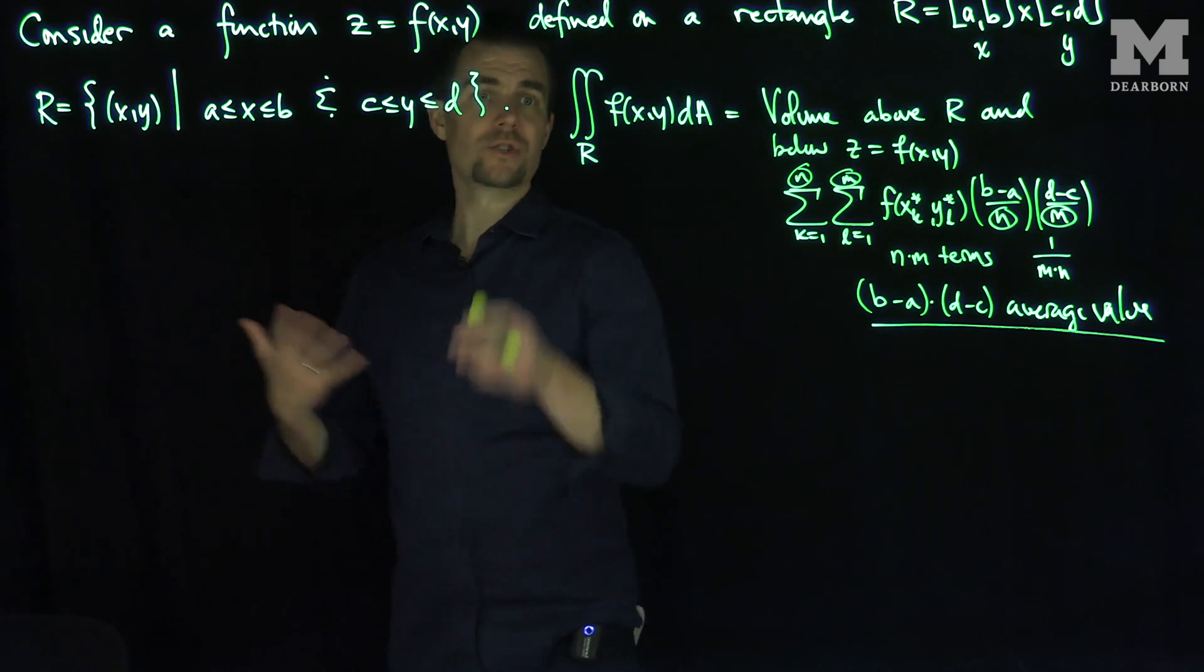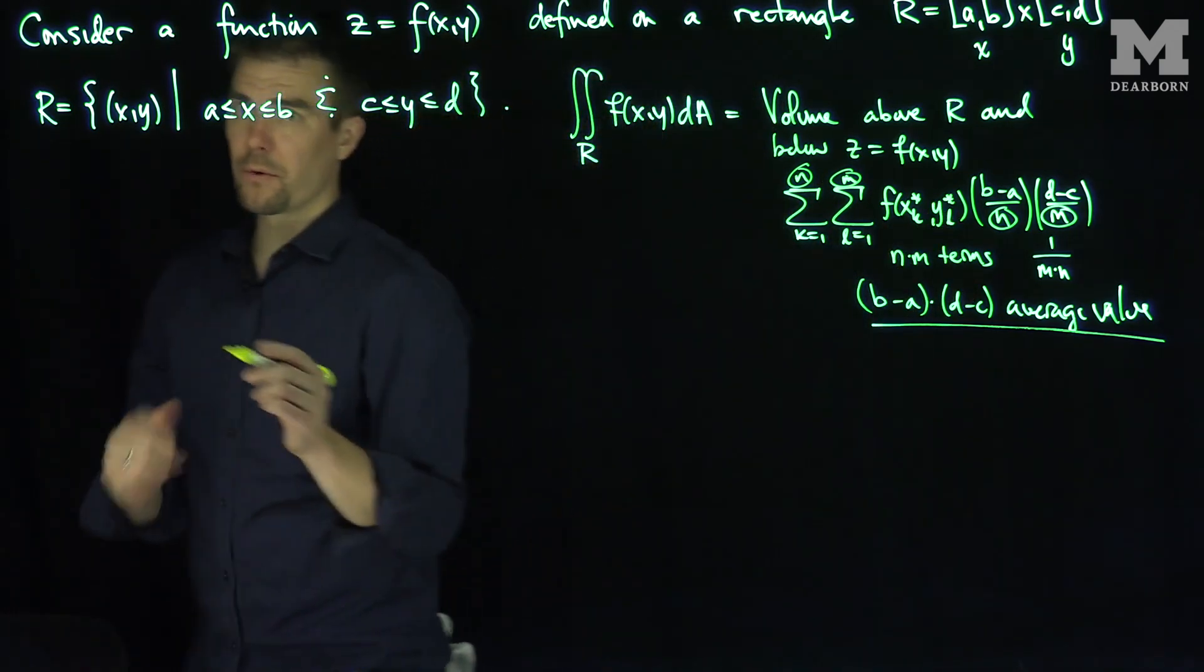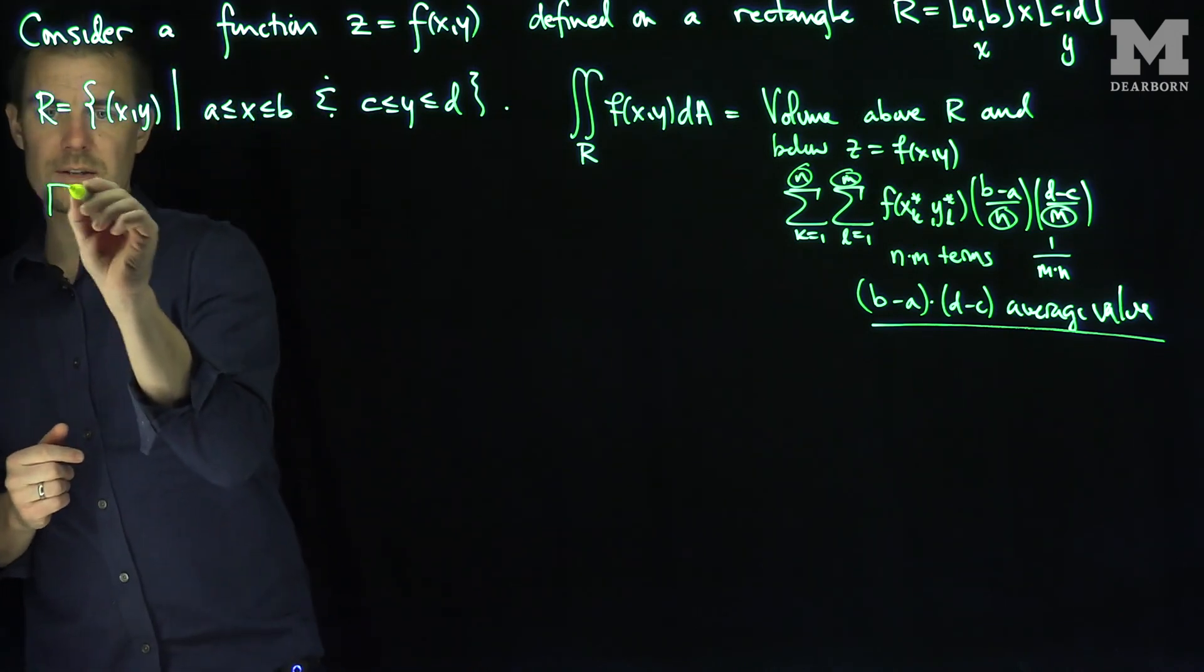Now, we've asked the question, how do I compute something like this without having to pass to a limit of Riemann sums? And we have this beautiful theorem of Fubini.